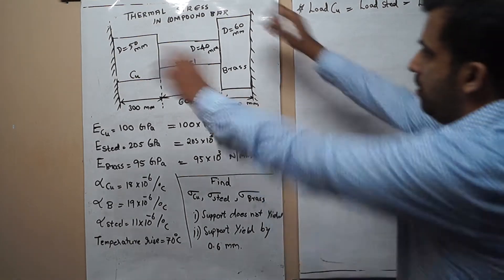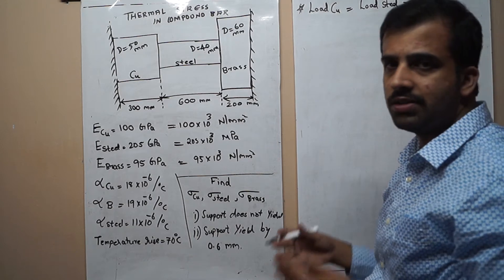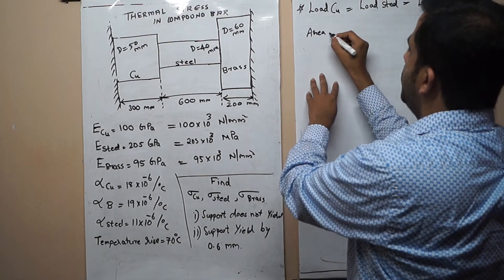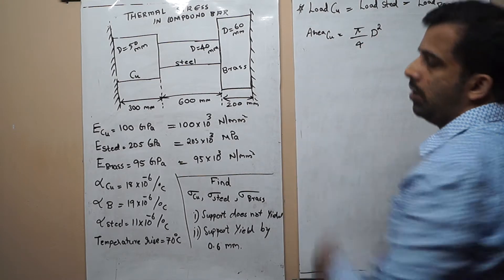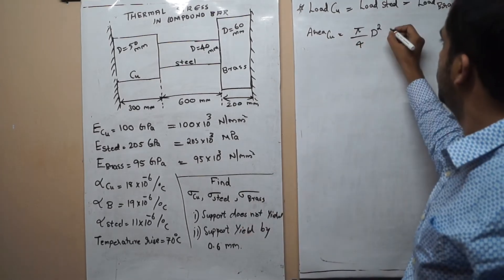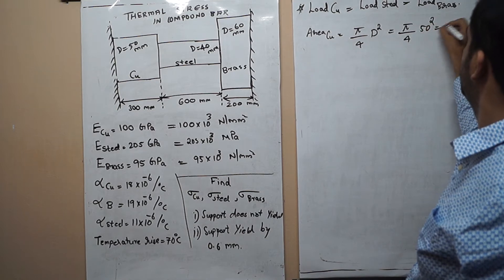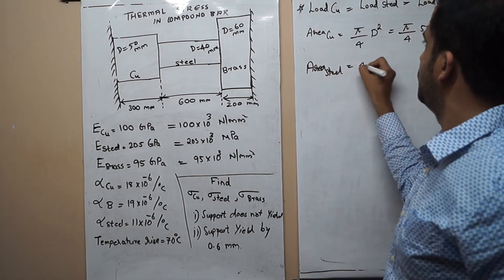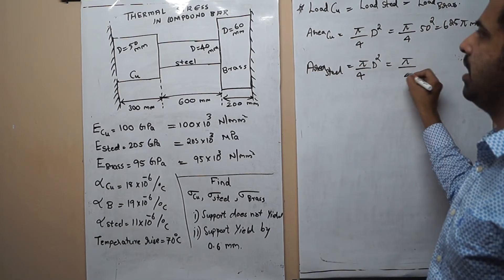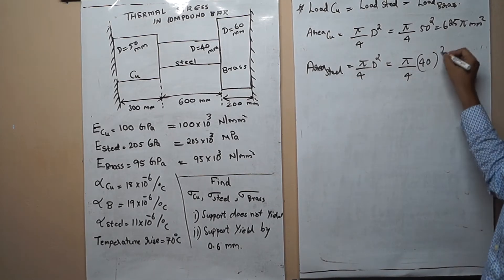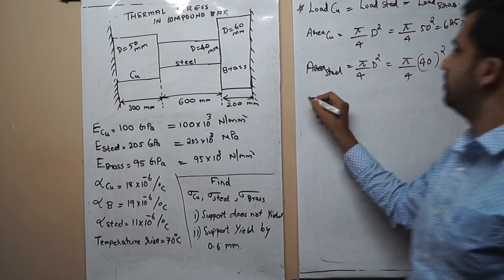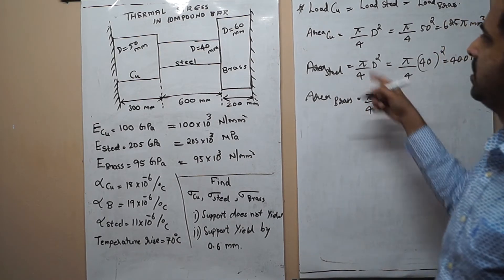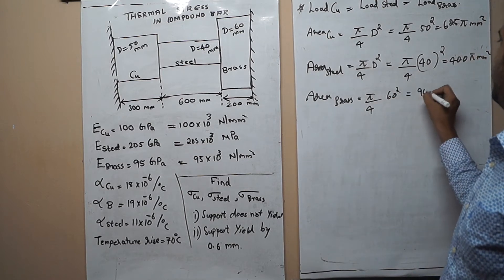Our first job is to calculate the cross-sectional areas. Area of copper = π/4 × 50² = 625π mm². Area of steel = π/4 × 40² = 400π mm². Area of brass = π/4 × 60² = 900π mm².